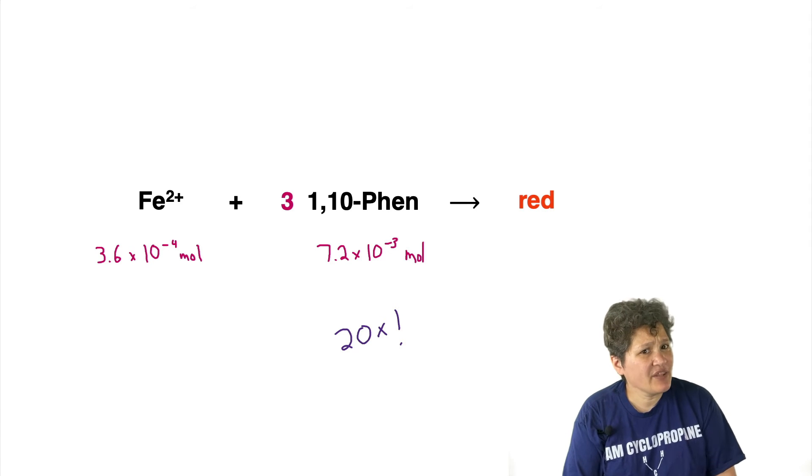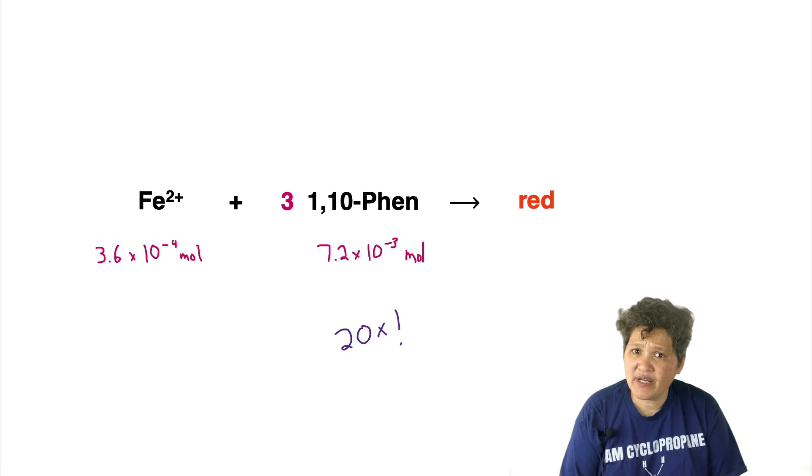Another way to put this is that we have an excess of phenanthroline and iron is our limiting reagent. If we lost a little bit of phenanthroline, we'd maybe only have 19 times as much phenanthroline as we do iron, but all of the iron would still be able to react. But if we lost a bit of iron, we would end up making less of the iron phenanthroline complex overall, our solution would be a little less red, and our whole analysis would be off. This is why the instructions tell you to do a quantitative transfer of iron, but not phenanthroline.